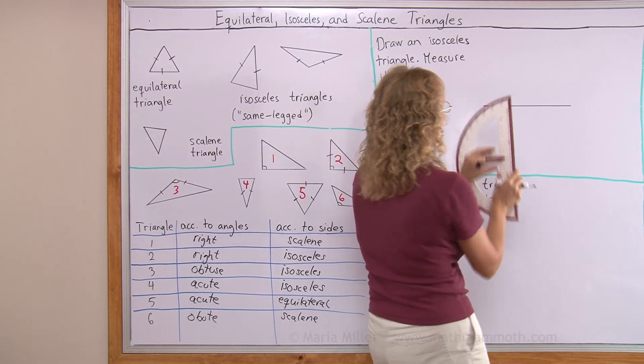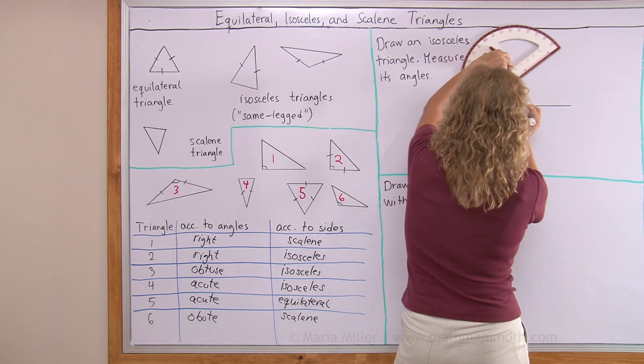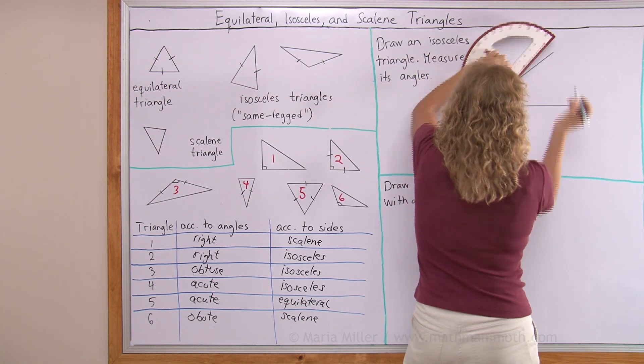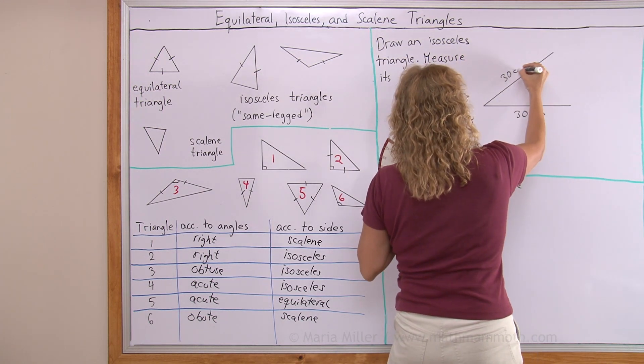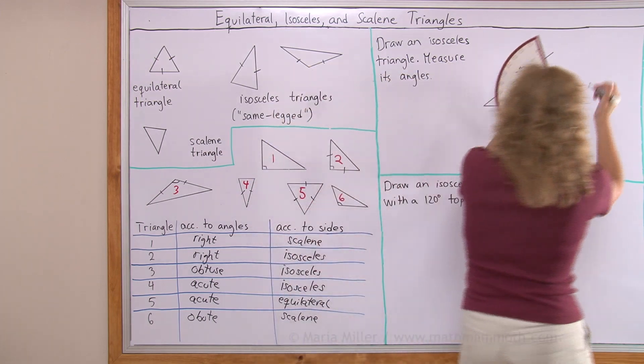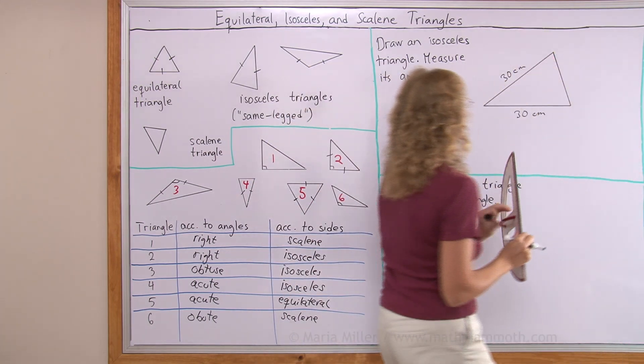That side is 30 and then I'll just draw randomly somewhere. And it's 30. Then I just draw in the third side. That's my triangle.